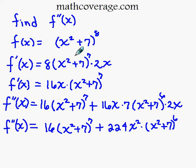So the first derivative you take the 8, bring it out front, rewrite what's in parentheses, subtract one from the exponent, which leaves you with the 7, and take the derivative of the inside. The derivative of x squared is 2x.